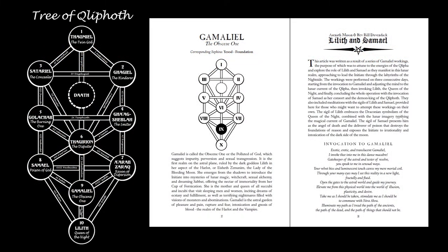In this video we will take a look at the third anthology by the Temple of Ascending Flame, Tree of Qliphoth. It is our largest book so far and you will find here a lot of information about the Dark Tree, both introductory and designed for more advanced practitioners of Draconian magic. So let's see what we can find in the book.